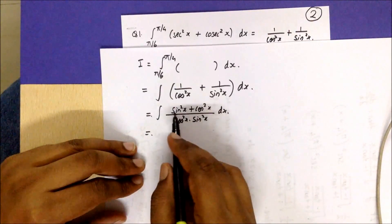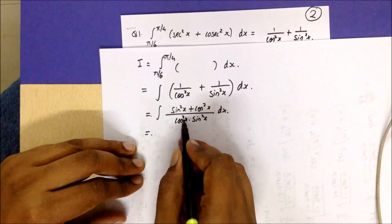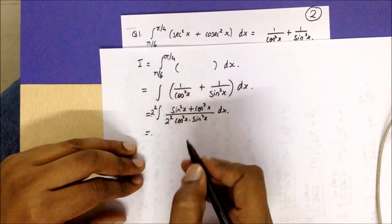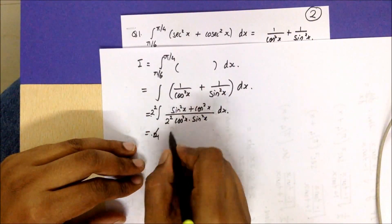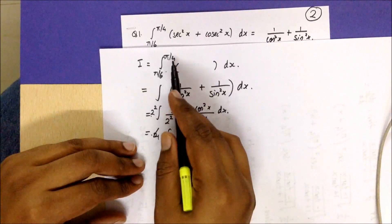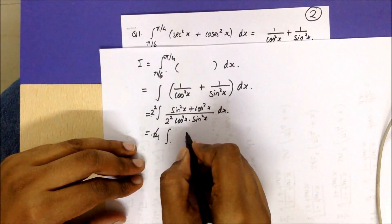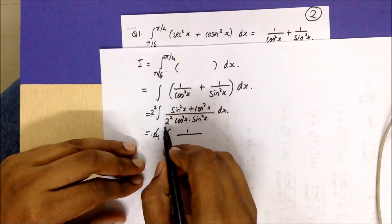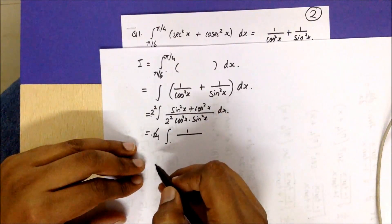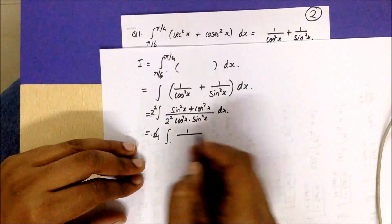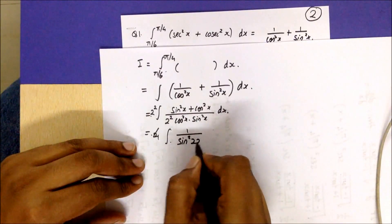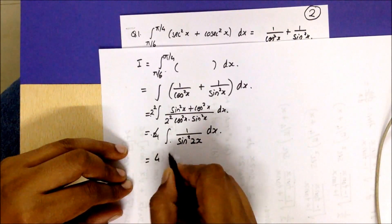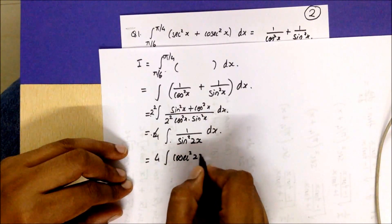Now sin²x + cos²x = 1, and we have 1/(cos²x·sin²x). If I multiply and divide by 2², I can get this as a 4 integral. The limits are considered — it's going to be 1/(2cosx·sinx)², which is basically the formula for sin2x. So it's going to be an integration of cosec²(2x). Now 1/sin is cosec, so that's going to be the integral of cosec²(2x) dx.